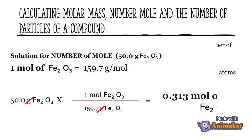Solution for number of moles: remember that 1 mole of iron(III) oxide is equal to 159.7 grams. Then we are ready to construct the conversion factors. Study the solution shown on the screen.